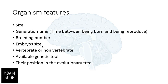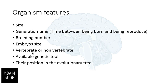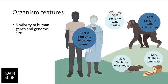The embryo size is essential — for example in neurodevelopmental biology, the embryo size matters. Being vertebrate or non-vertebrate is also considered for different studies, because vertebrates are more similar to humans than non-vertebrates. But some features, like generation time or embryo size, may lead researchers to choose non-vertebrates. Our model organism should also have available genetic tools, and their position in the evolutionary tree is very important to be considered as a good model for human studies.